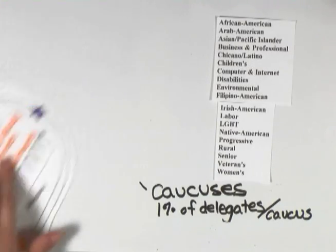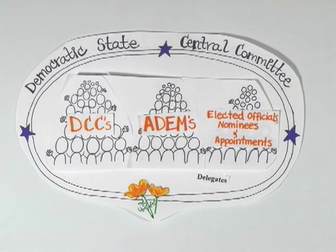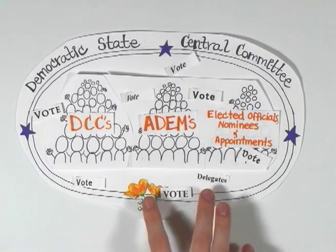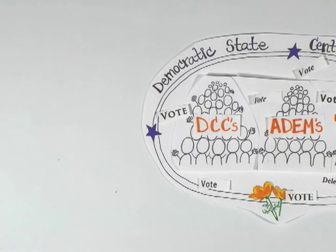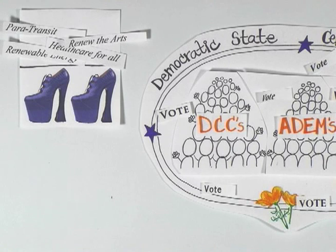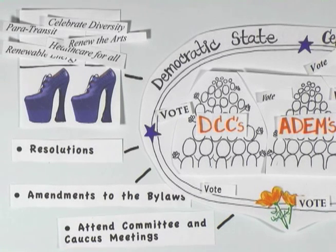Both the standing committees and caucuses generally meet at every convention and e-board meeting. At the state convention, delegates or their proxies elect party officers including regional directors, approve the state platform for the party, make decisions on resolutions and endorsements, and vote on other party business. Sometimes a particular issue of importance will be addressed in a standing committee meeting, so delegates often attend those meetings to make their voices heard, even when they are not members of the committee.